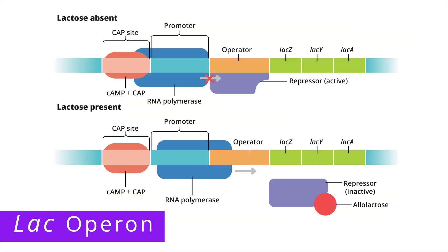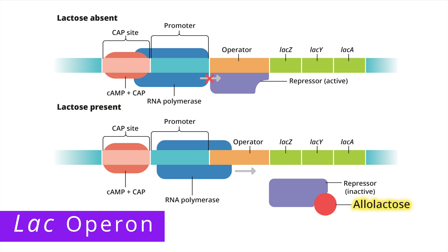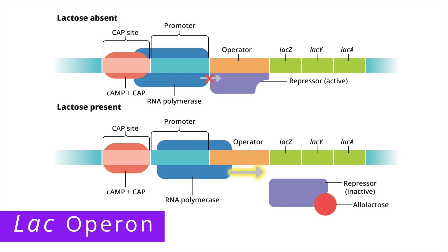Let's take a closer look at how this inducible operon works. In the top image, lactose is absent in the environment, so the cell does not want to waste resources making enzymes to break down lactose. Consequently, the lac repressor is bound to the operator site, which blocks transcription of the genes in the operon. However, in the bottom image, lactose is present in the environment, which is converted into allolactose inside the cell. Allolactose binds to the repressor, changing its shape such that it can no longer bind to the operator site, which in turn allows for transcription of the genes in the operon.